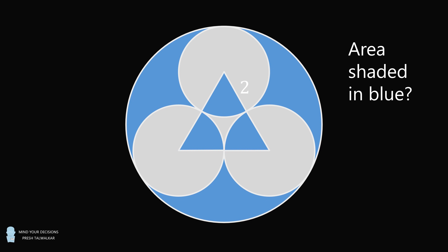The figure is constructed as follows. There are three circles of radius 2 that are pairwise tangent. A large circle is circumscribed about these three circles. We want the region contained by the large circle, excluding the region of the three small circles and the area that's in between the three small circles.